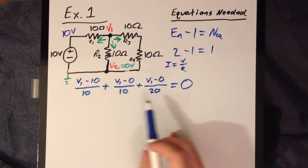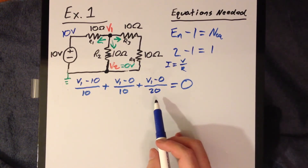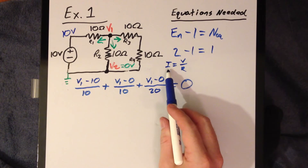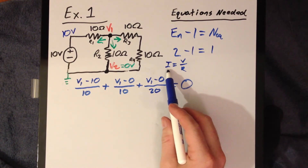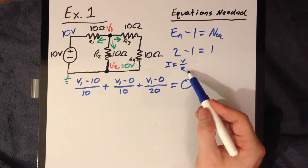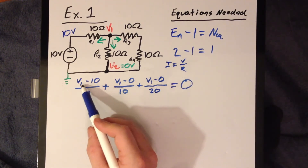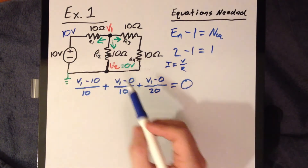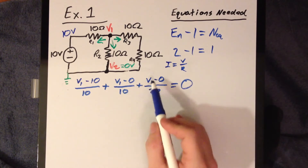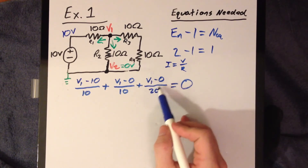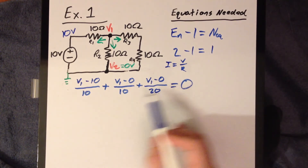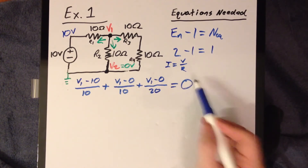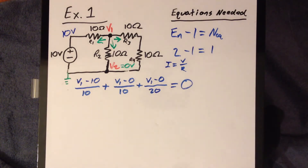This might look a little daunting at first, but you can quickly see that it's three currents being summed up, since we're representing current as voltage over resistance. We have a voltage difference over resistance for each branch, and Kirchhoff's Current Law says that the sum of all those equals 0, making our right-hand side simple.